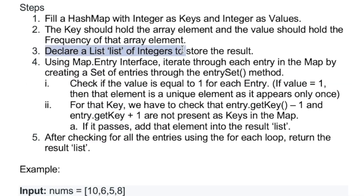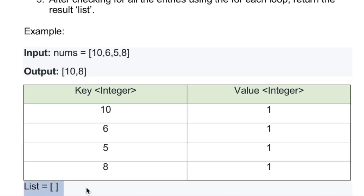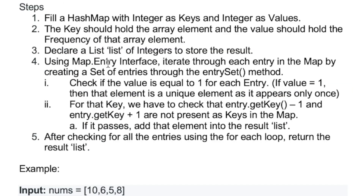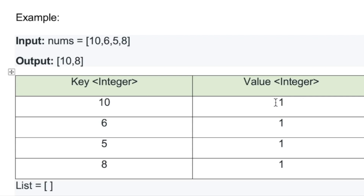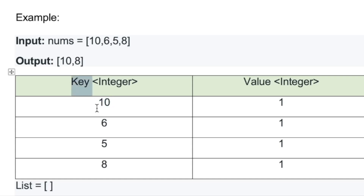Now declare a result list to store the answer, initially empty. Using the map's entry interface, iterate through each entry. For each entry, first check if the value equals one — meaning it's a unique element. Then check the second condition: x plus one and x minus one should not be present in the array. For x equals 10, x plus one is 11 and x minus one is 9 — neither is present, so 10 is added to the list.